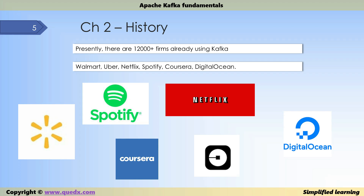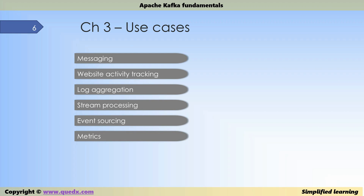Let's look at various use cases where Kafka can be used. Kafka can be used for messaging — it can serve as a message broker to decouple producers from consumers and act as a buffer to absorb spikes in message volumes. Kafka can also be used for website activity tracking: user activity is published to topics generally separated by activity type, such as search, page views, or submit. These topics can then be subscribed to for real-time processing and storage.